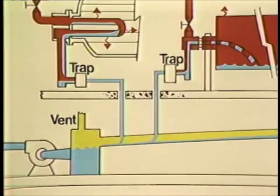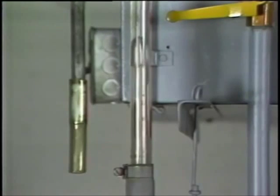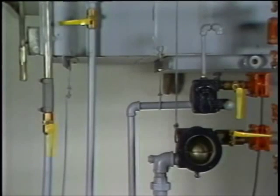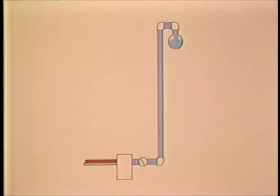Ideally, condensate should flow from the steam trap by gravity to a receiver. Such an arrangement is not always practical, however. In some applications, the only space available for return lines is overhead, so condensate must be elevated from the trap. The force to elevate condensate is provided by the differential pressure across the trap. Since each two feet of lift reduces this differential pressure by one pound, be sure there is adequate pressure both to elevate the condensate and to maintain adequate trap capacity. When elevating condensate, use a check valve either immediately downstream of the trap or integral to the trap, to prevent backflow of condensate into the heat exchanger when the control valve closes.